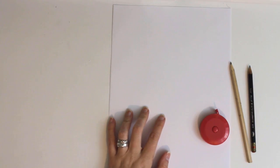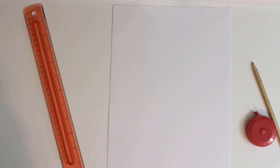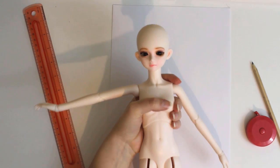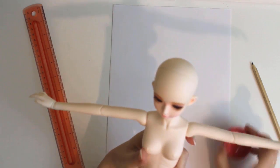So for this project, you'll need a pencil, a ruler, a measuring tape, and some paper. You'll also need a doll to measure. For this, I'll use my new Mystic Kids Lillian, since I haven't finished any patterns for her yet.